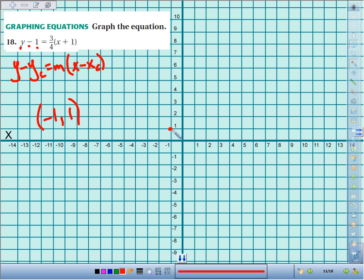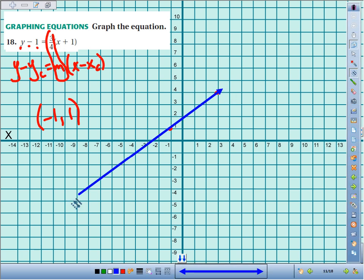Your slope right there is 3/4, so we'll rise 3, we'll run 4. There's another point, and all we have to do is play connect the dots.